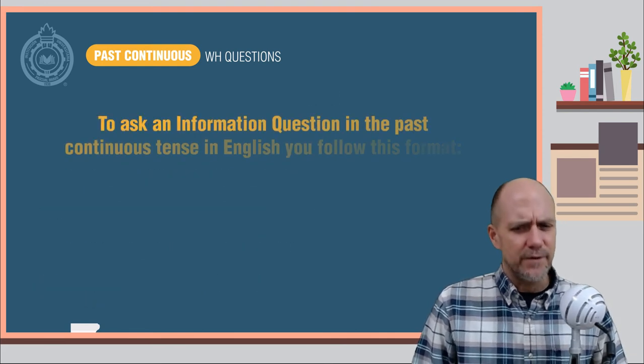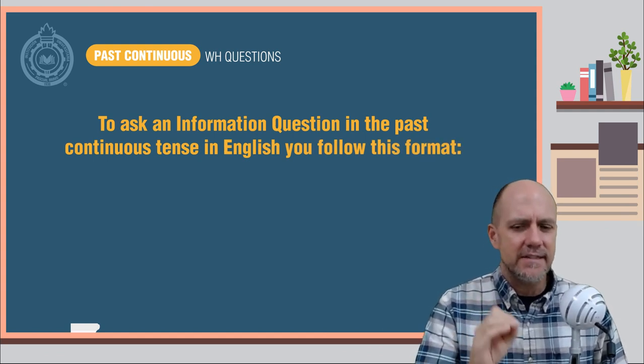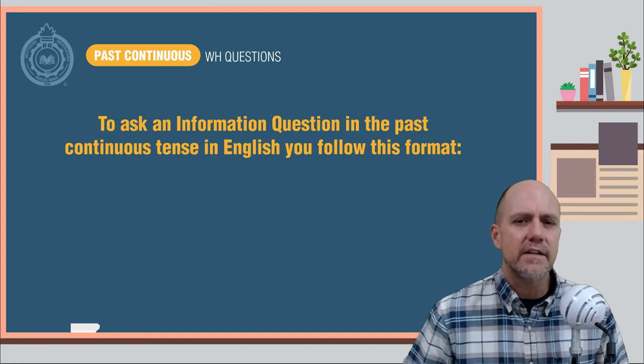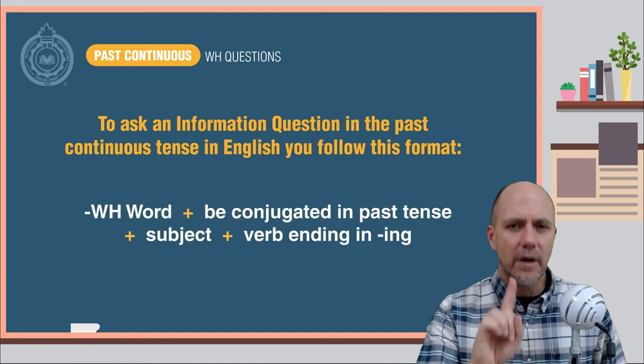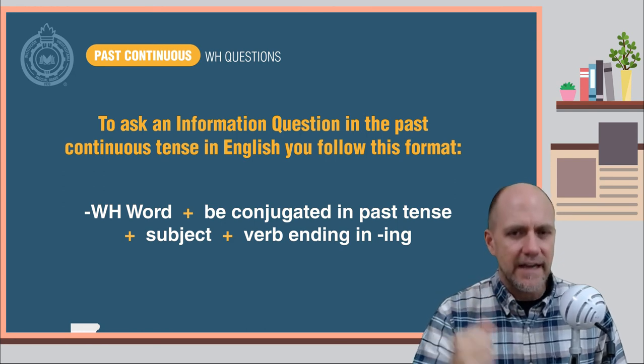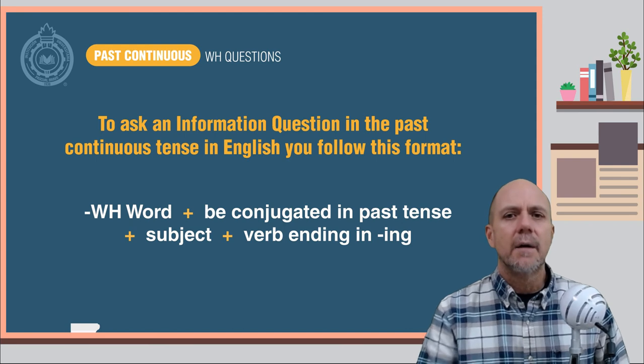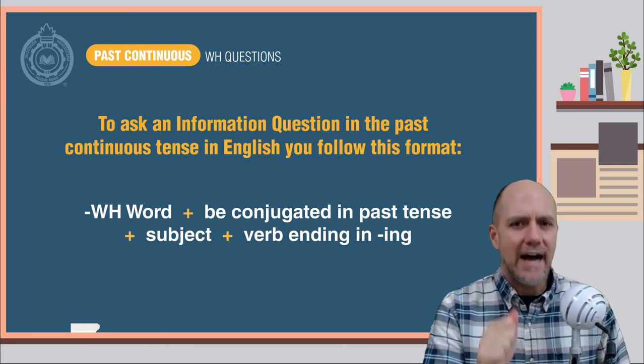Let's review. To ask an information question in the past continuous tense in English, you follow this format. The WH word, plus be conjugated in the past tense, plus the subject, plus the verb ending in ING.